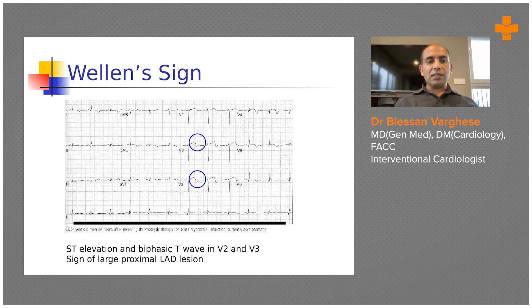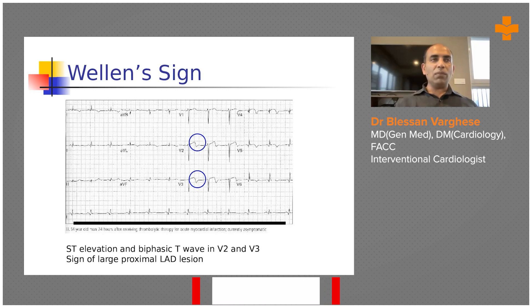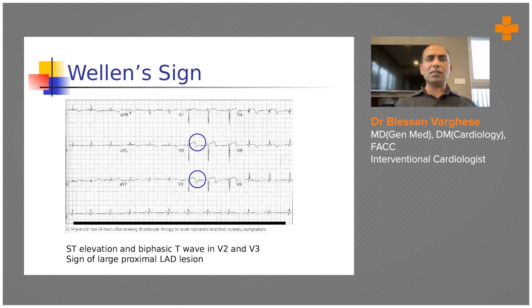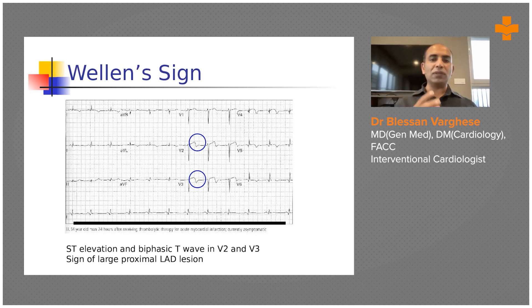This is a very peculiar and unique ECG showing a biphasic T wave in leads 2, 3 - it is called Wellens' sign, named after the physician who observed and described it. It correlates with a proximal LAD tight stenosis and has very high specificity. A patient with this biphasic T wave pattern and a history of preceding chest discomfort simply means there is a non-occlusive tight lesion in the proximal LAD that can progress to complete occlusion at any time. We should catch this patient early, perform angiogram and revascularization promptly. The biphasic T wave is seen especially in precordial leads V2, V3, and V4.